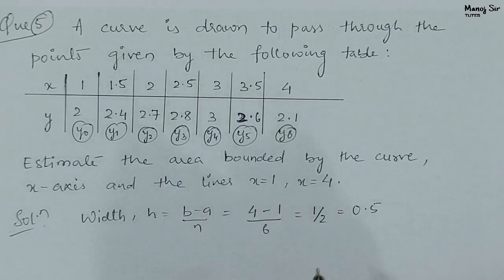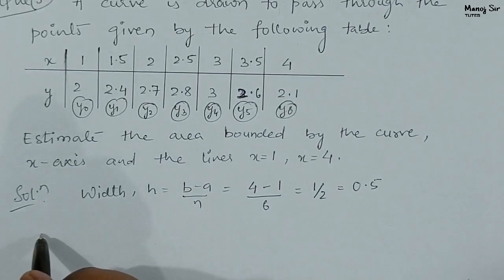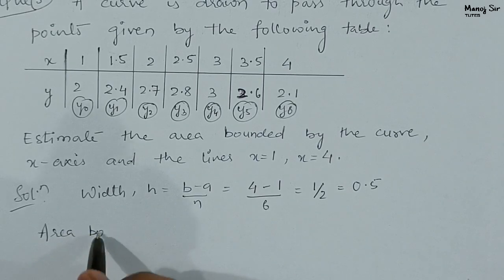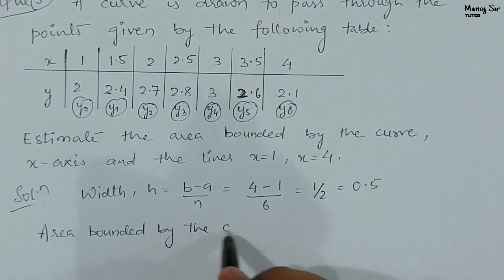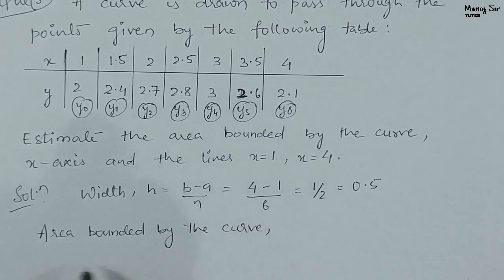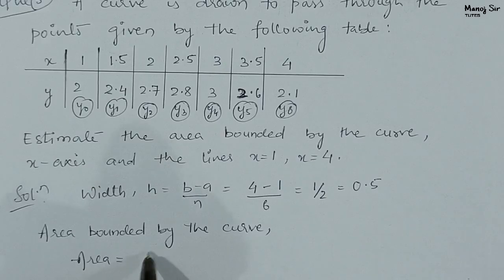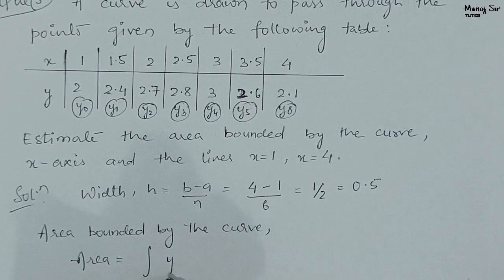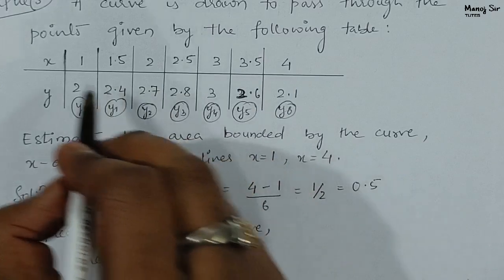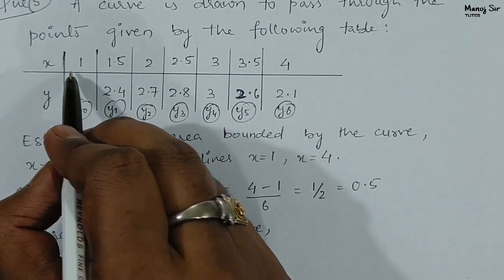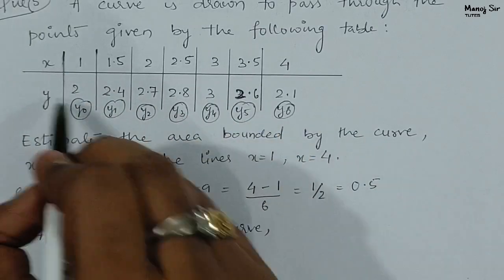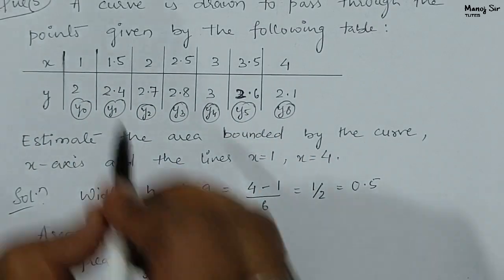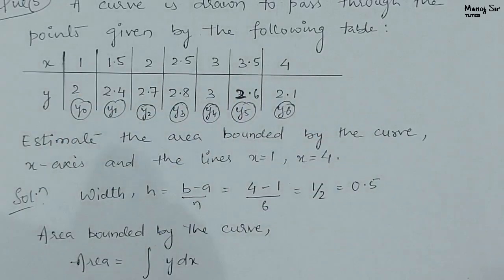We need to find the area bounded by the curve. Area equals the integration of y dx, where x is the independent variable and y is the dependent variable. The range of x goes from 1 to 4, so the limits go from 1 to 4.